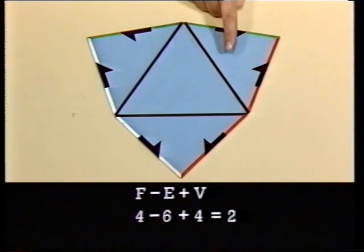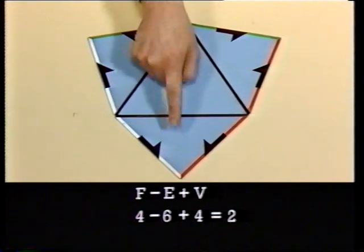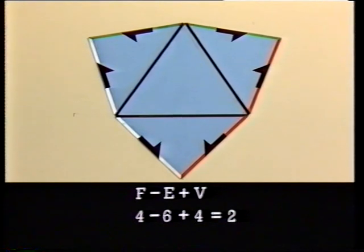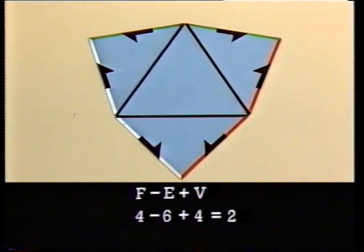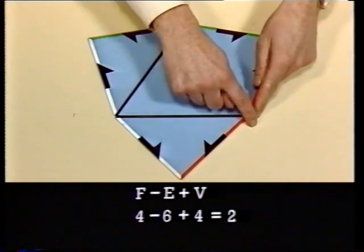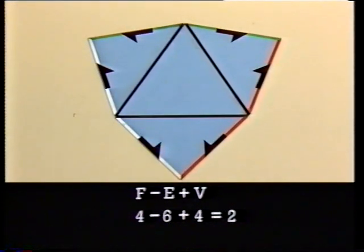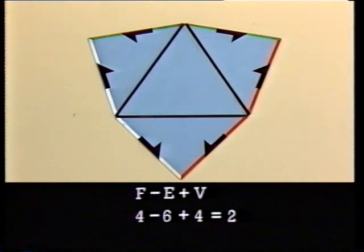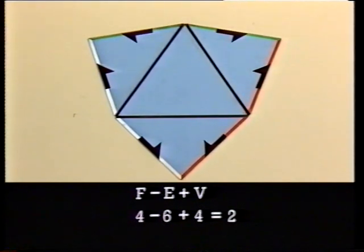Since we got this by first deforming the sphere into a tetrahedron and then flattening, we expect to get the same answer. Four faces is OK. Now, edges: it looks like we've got nine — six outside and three inside. But the outside edges have to be identified in pairs, so we've really only got three edges on the outside. Therefore the total is six. Vertices? It looks like six, but when the edges get identified, these three corners merge into a single vertex. So there's that vertex plus these three, which is four again. So the Euler characteristic of the sphere is the same as for the tetrahedron: two.